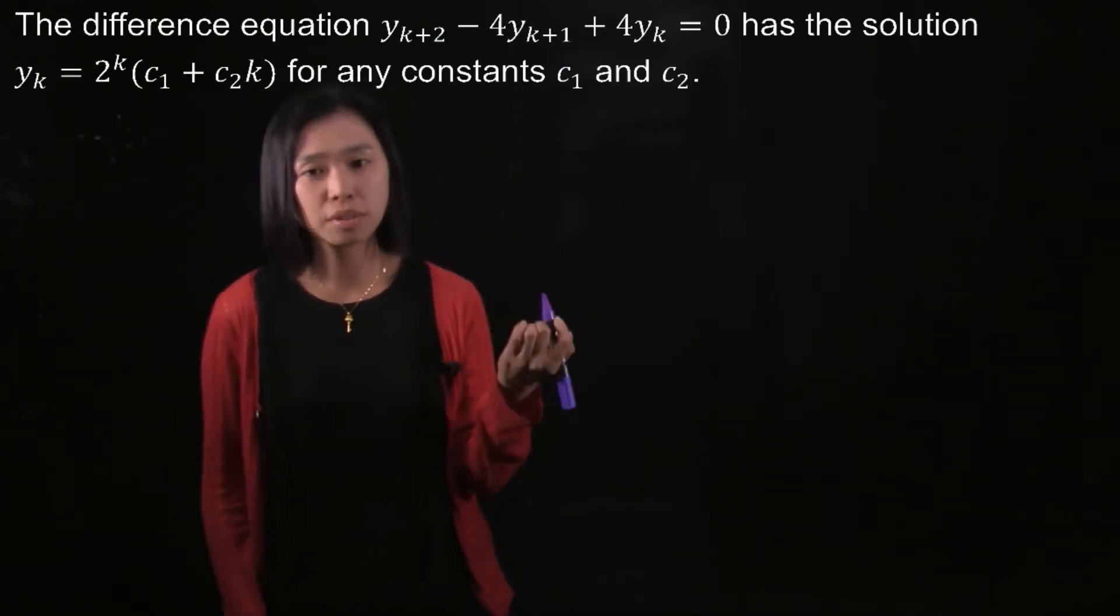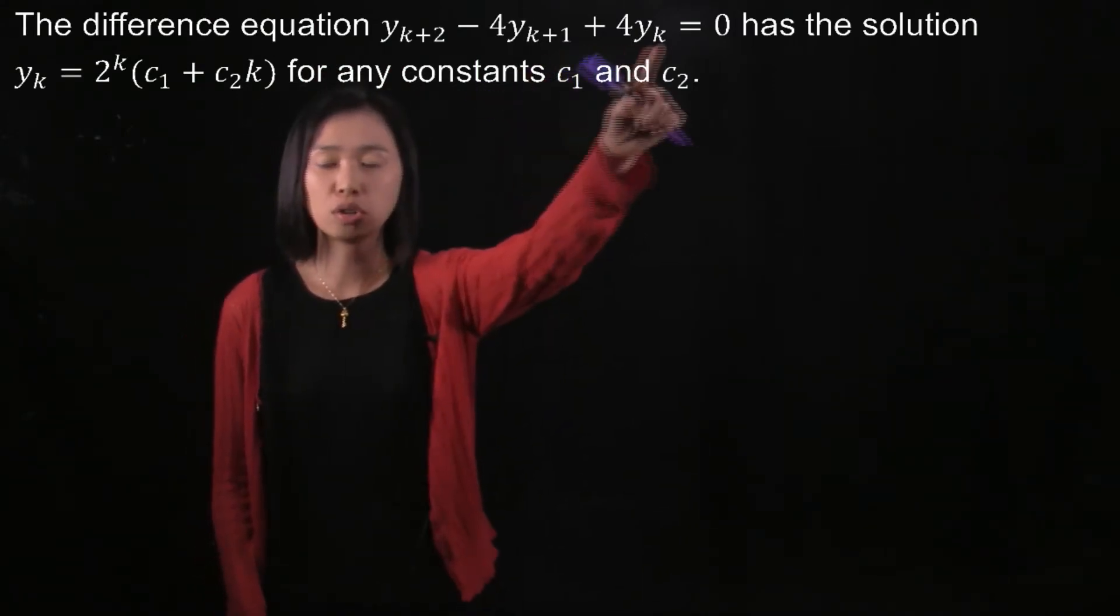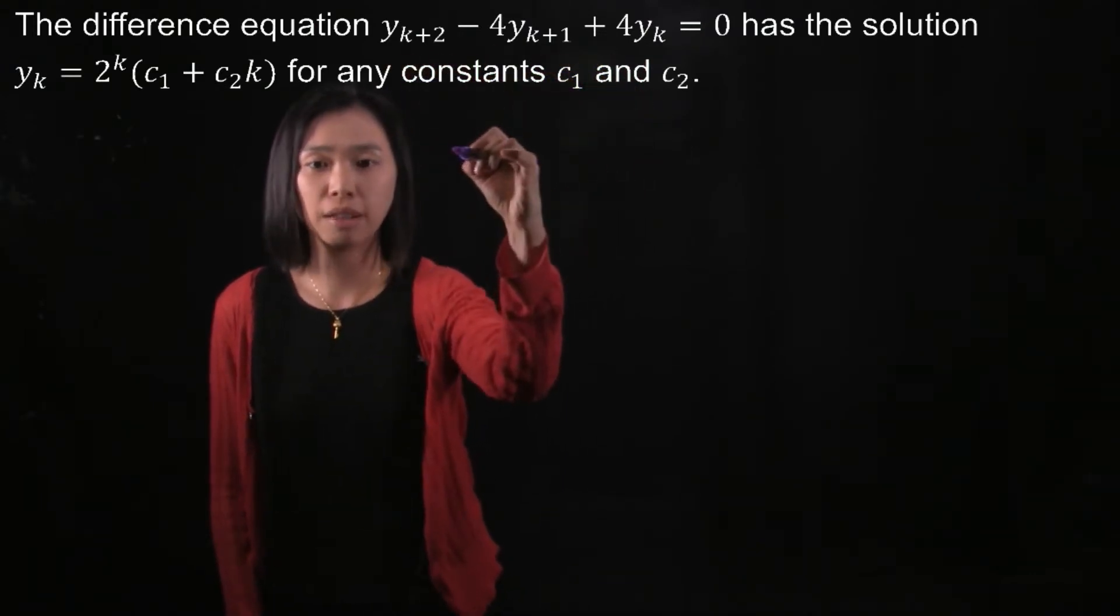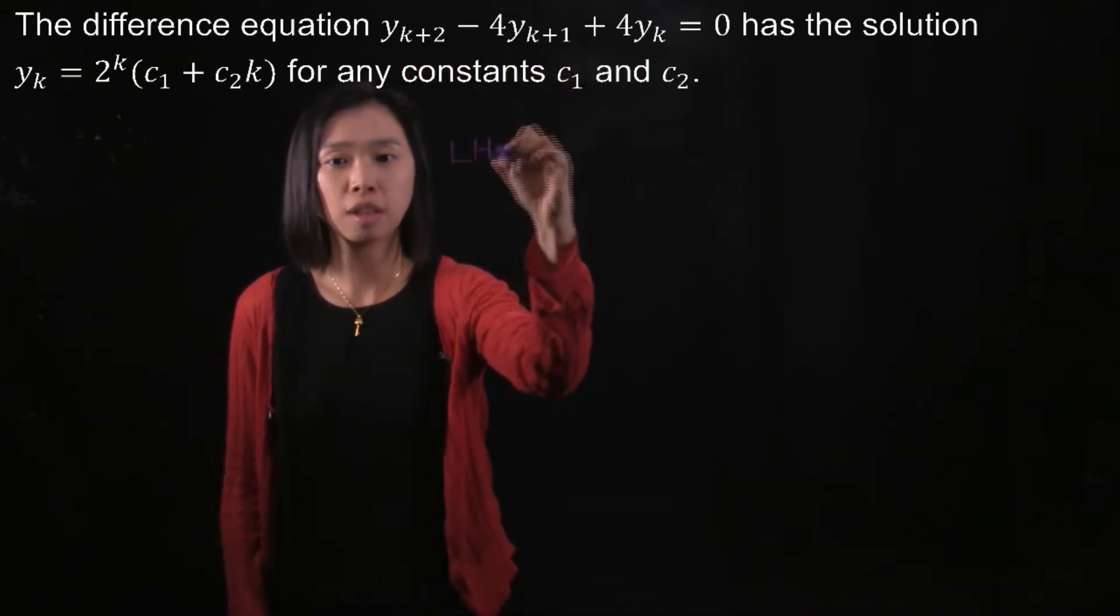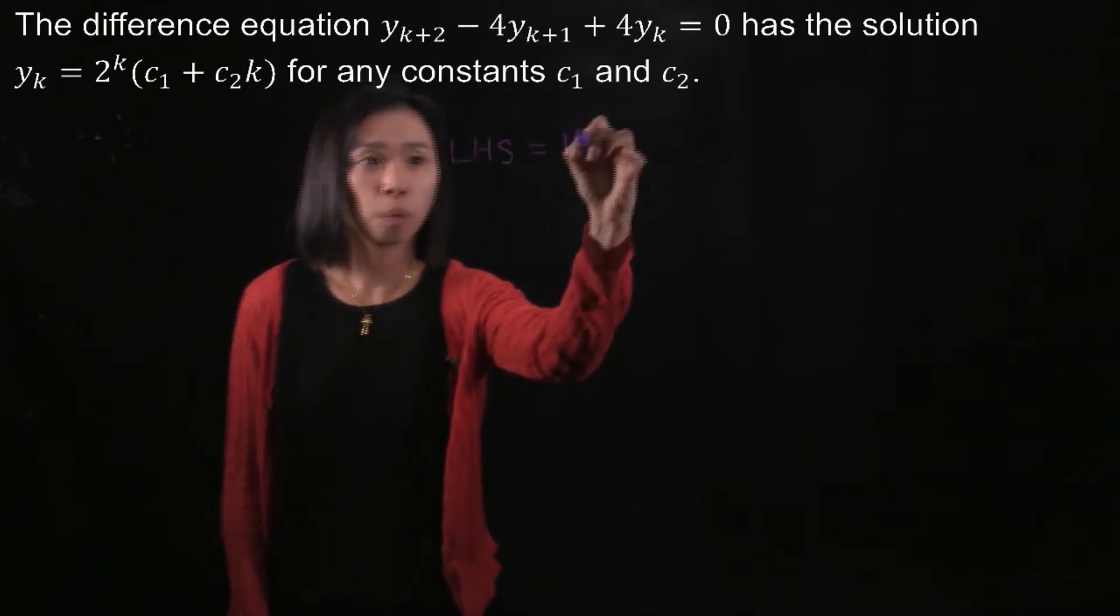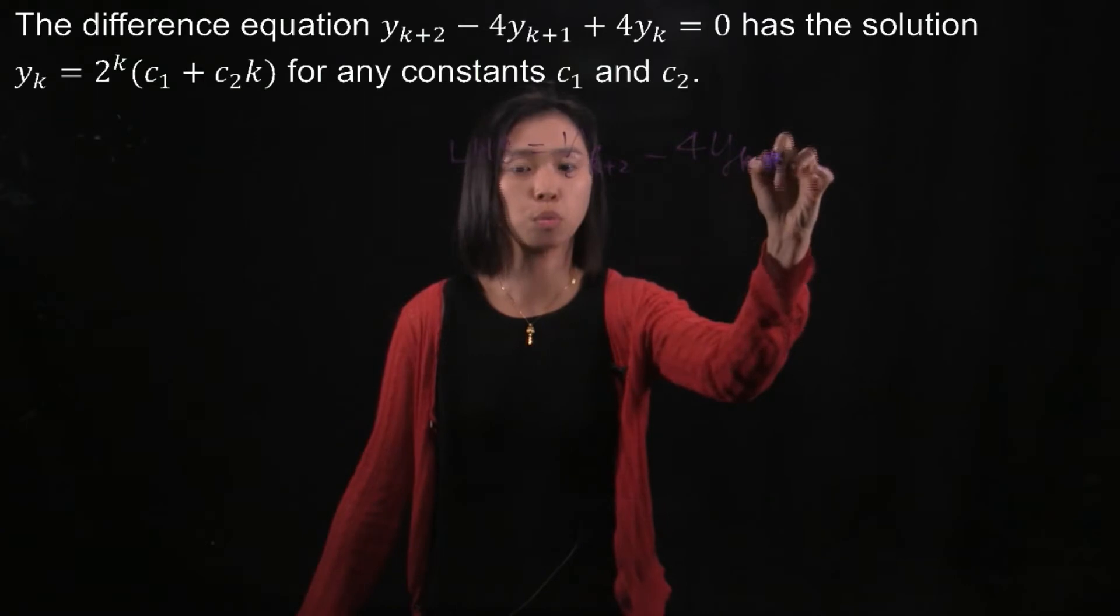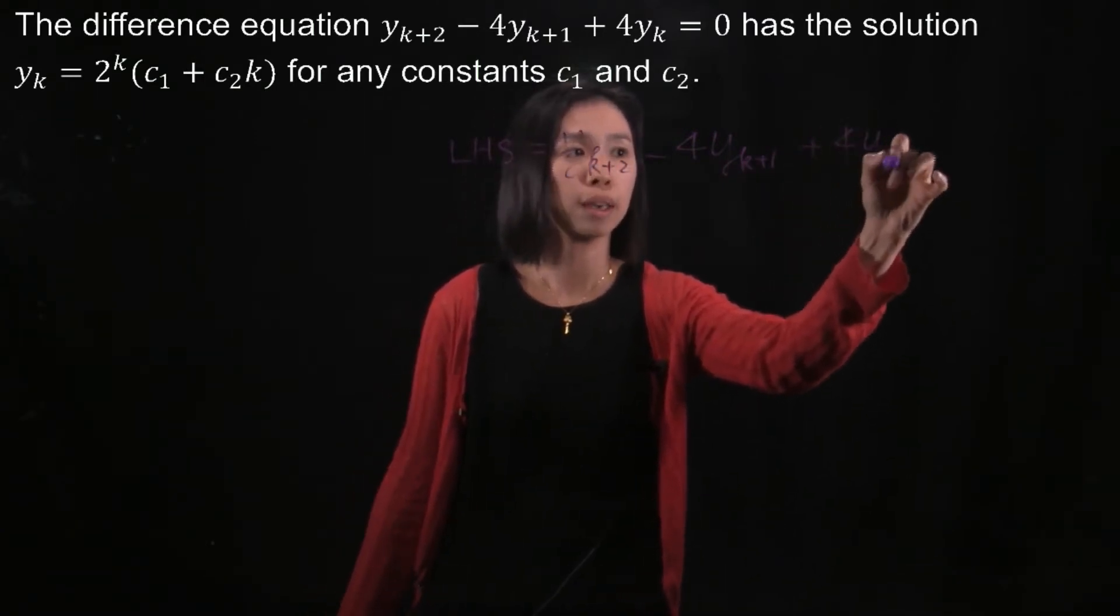So how are we going to do it? We start with one side of the difference equation. Of course, we will start with the more complicated side. So we start with the left-hand side: y_{k+2} - 4y_{k+1} + 4y_k.